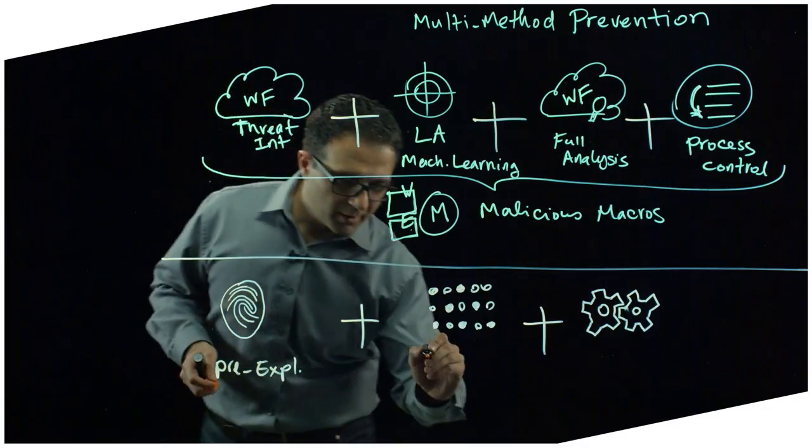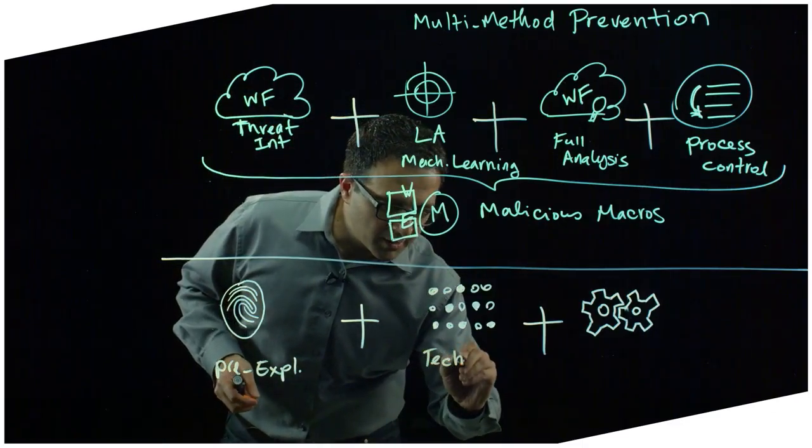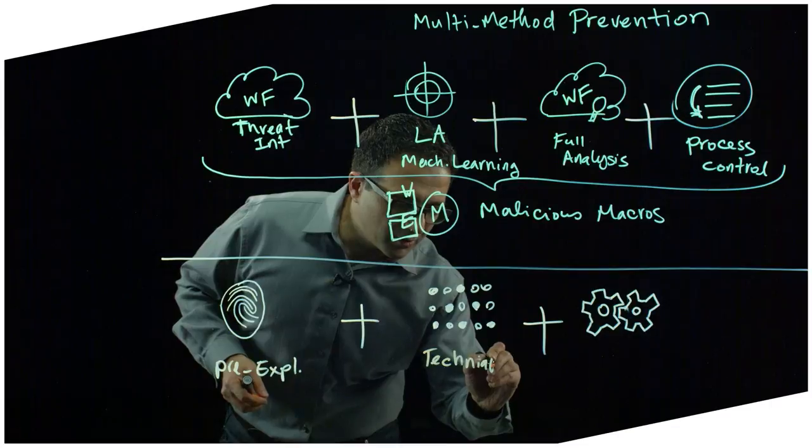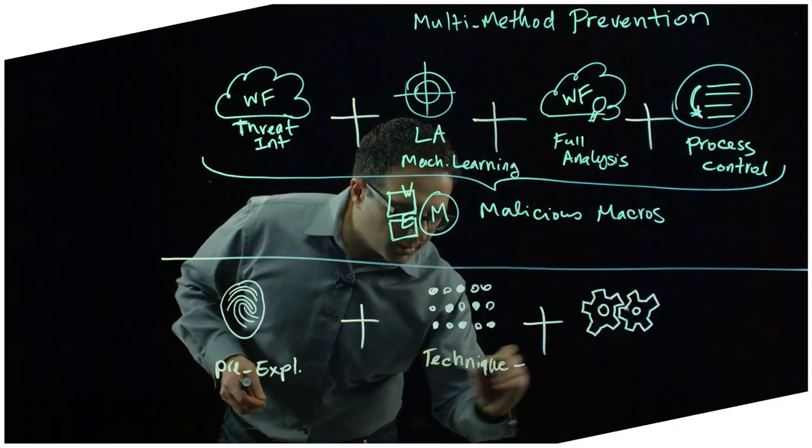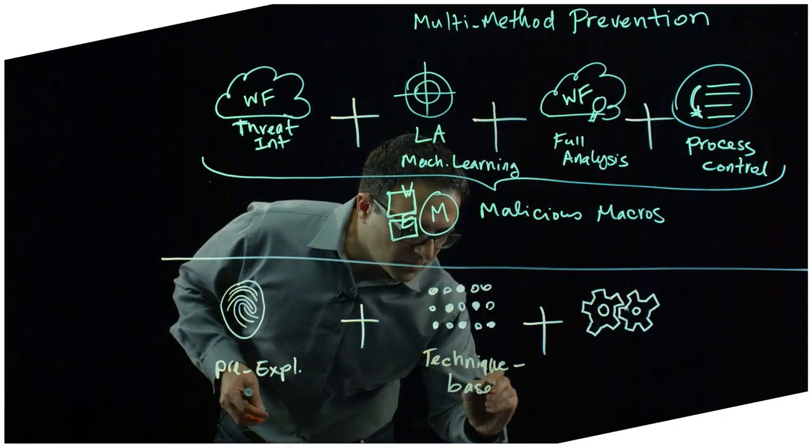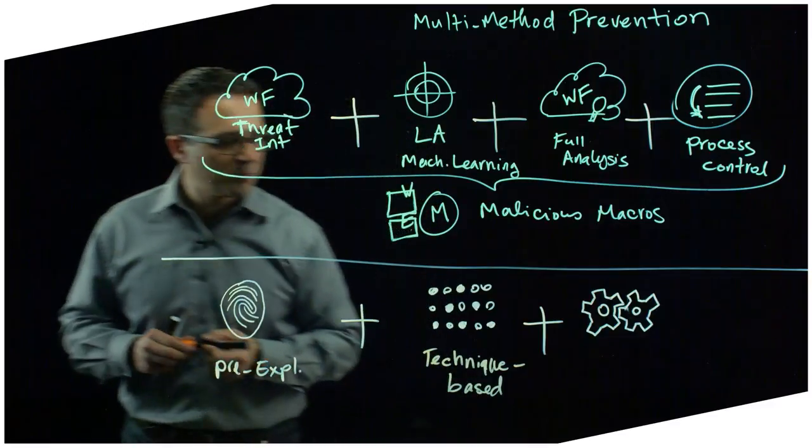We also have the ability to block the techniques that attackers use in all of their exploitations. So our technique-based exploit prevention technology allows us to prevent the underlying techniques that all exploits use, whether they're known or unknown to us humans. So traps can stop both known and unknown or zero-day exploits just as well.